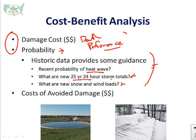What about snow loads and wind loads? We can look at recent historic data for guidance. The cost of avoided damage — installing that shade structure or building that geothermal system — is compared against the damage cost to make that decision. The challenge is the probability: if we knew there would be a heat wave every year, we'd obviously be preparing our facilities. Since we don't, we're stuck looking at probabilities to make educated planning decisions.